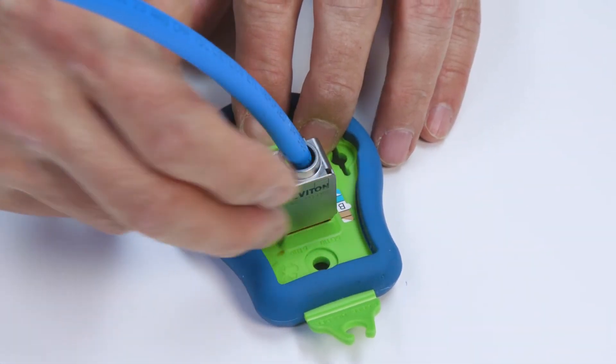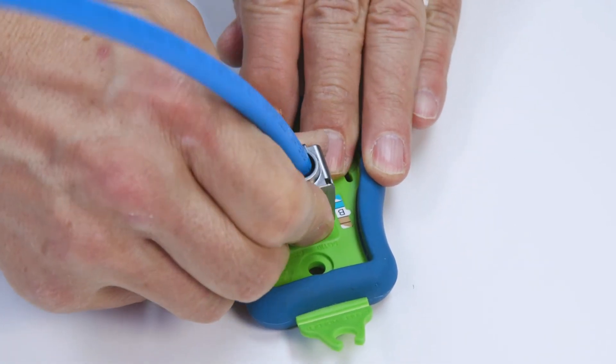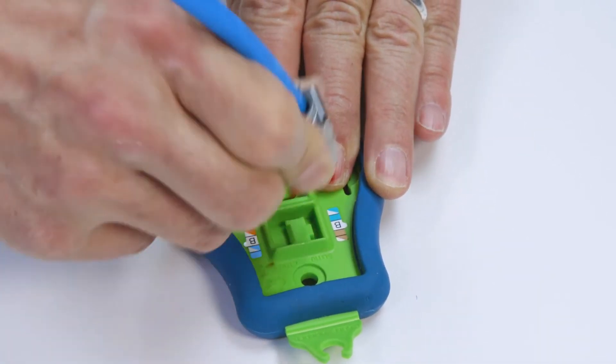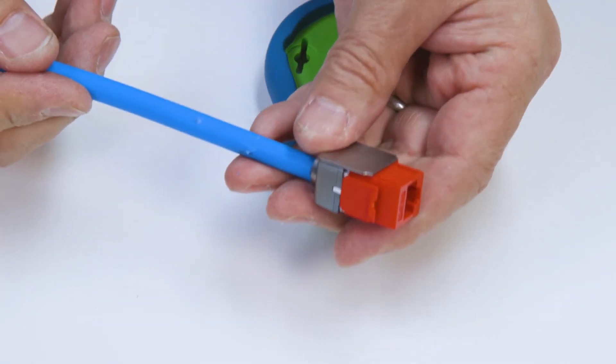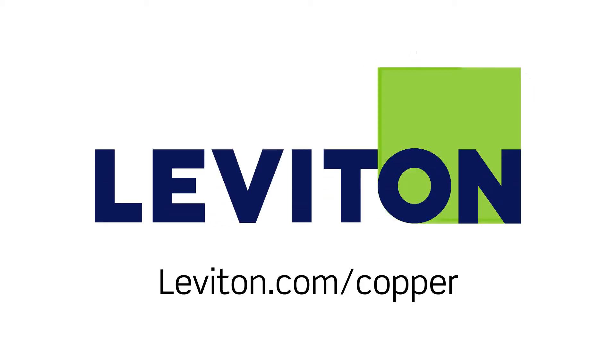If you're terminating a CAT 5E or CAT 6 extreme jack, use the dust cap included with these jacks. Remove the jack from the palm tool. It is now ready for use. For more information, visit leviton.com/copper.